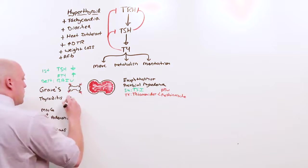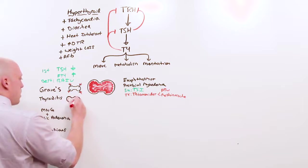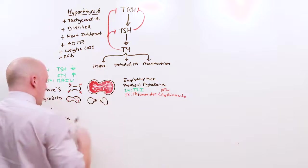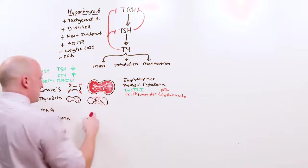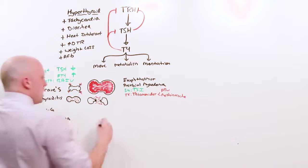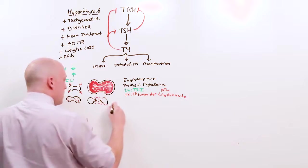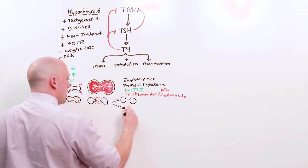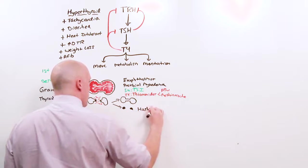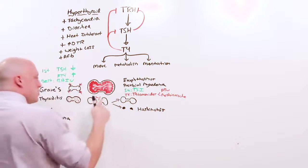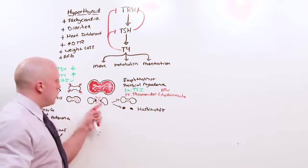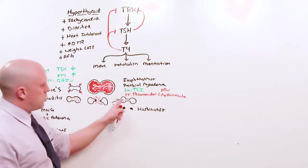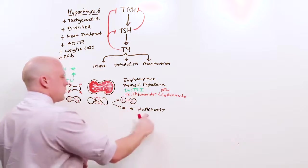In thyroiditis, you have a thyroid with preformed T4 in it. Then some itis comes along and causes a problem and the thyroid fractures. All that T4 spills out. So you have a transient hyperthyroid state. Then once all that thyroid is dumped out, either the thyroid will heal or it'll shrivel up and die. Shrivel up and die is Hashimoto's. During the hyperthyroidism, no new T4 is being made. So radioactive iodine uptake would look totally cold. This is returned to function, new T4 comes back. Loss of function is Hashimoto's.